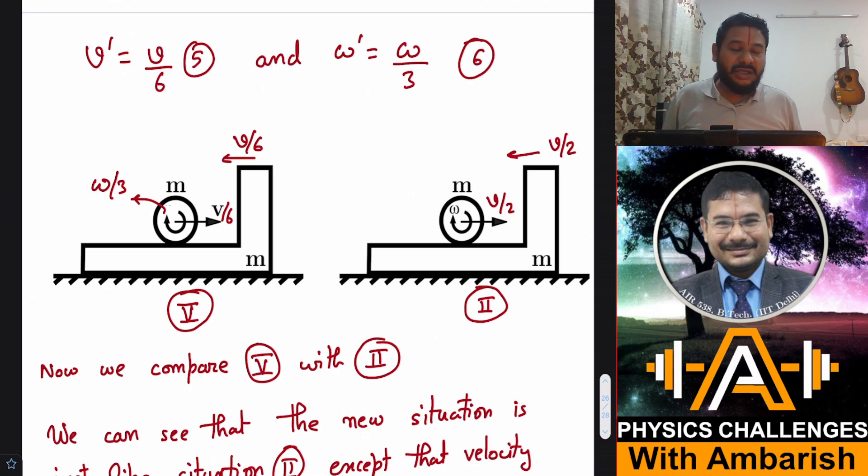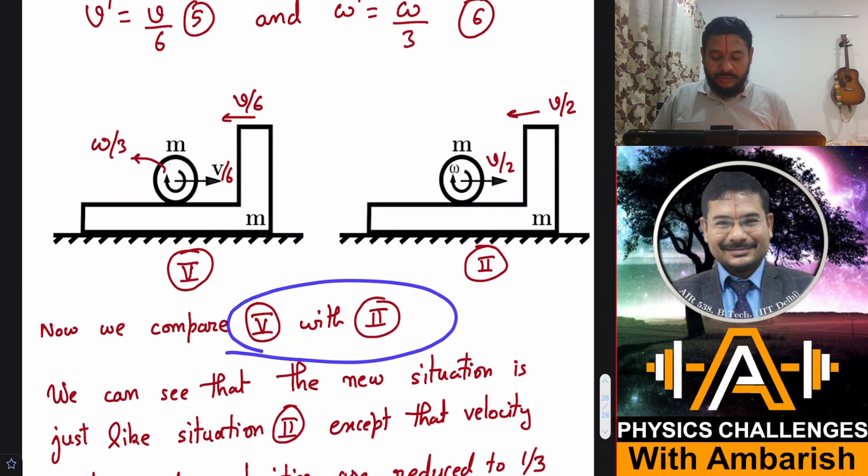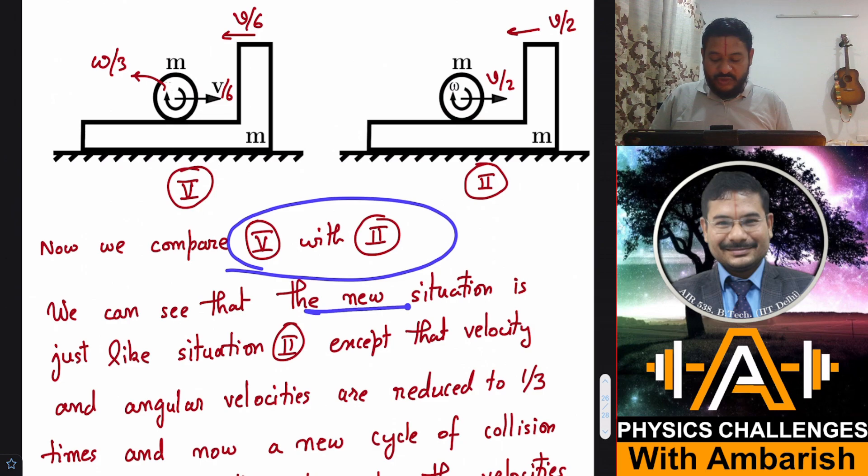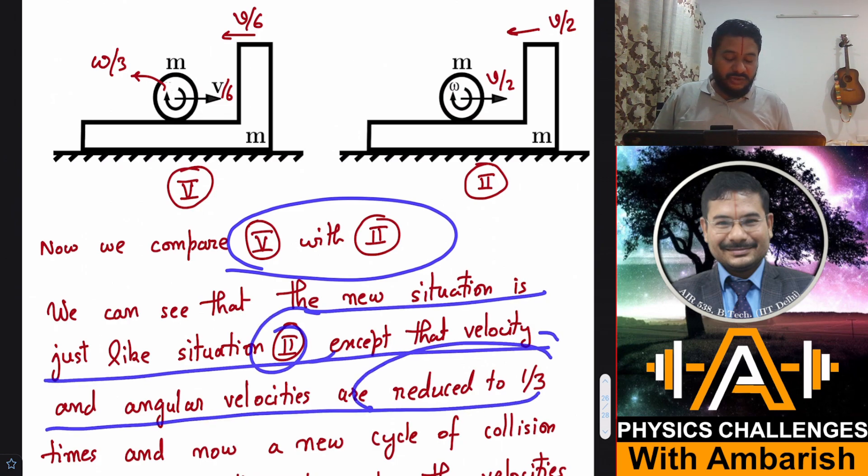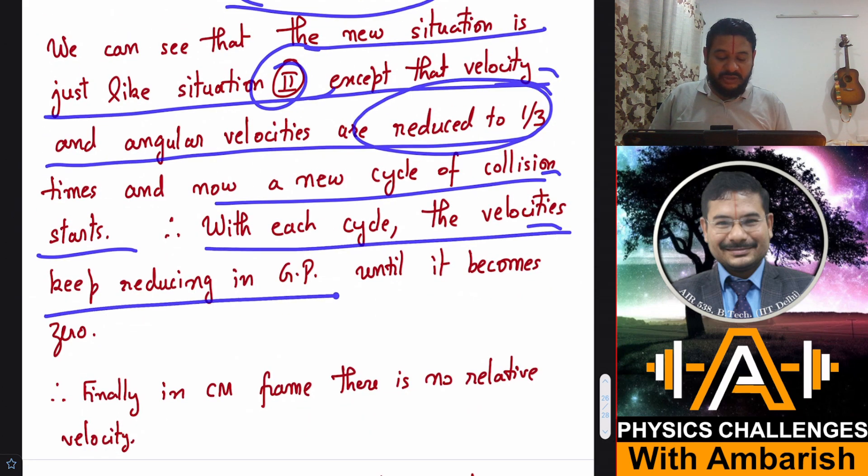That means a new cycle has started and the same phenomena will occur over and over again as further cycles proceed. So velocity becomes one third, and at the beginning of next cycle it will become one ninth, and then one by twenty-seven times, and so on. So it will reduce in geometric progression. If we compare figure five with figure two, we can see that the new situation is just like situation two, except that velocity and angular velocities are reduced to one third times. And now a new cycle of collision starts. With each cycle, the velocities keep reducing in GP until they become zero.